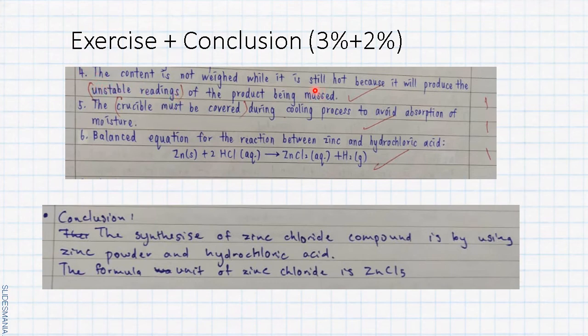The last part, we have to answer the questions. These are the answers for the questions. It's repeated from the precaution step. We are not weighing while it is still hot, why? Because it will produce unstable reading. And the crucible must be covered, why? Due to avoid absorption of moisture. This is the properties of zinc chloride—it's a hygroscopic compound, easy to absorb moisture or water vapor.